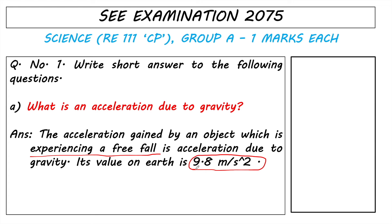Its value on Earth is 9.8 meters per second squared. The universal equation for calculating force is: force equals mass times acceleration, or F = ma. Whenever an object is experiencing freefall, the acceleration 'a' becomes equal to acceleration due to gravity. Good luck and thank you.